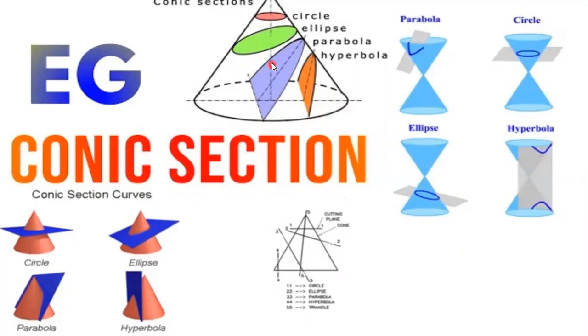This is a cone. In this cone, this is the axis. This is called a generator, and this is the base of the cone. The topmost portion is called the apex. When we cut the cone with a cutting plane slightly inclined to the axis, then we will be getting a parabola.